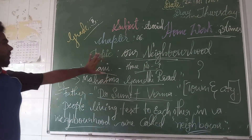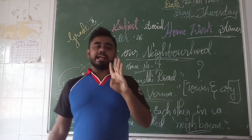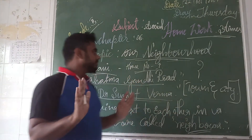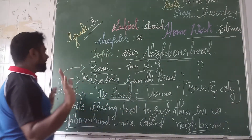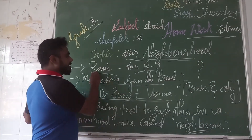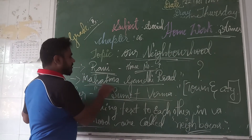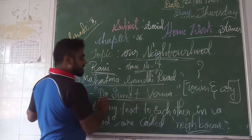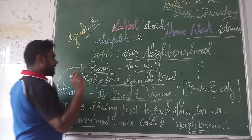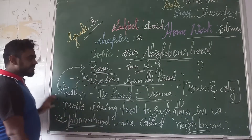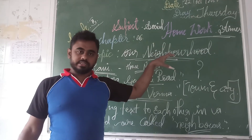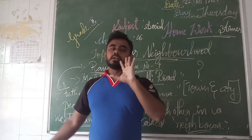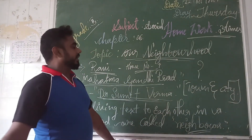So that is all the things for our first class of this chapter. What are the things we did today? Ravi lives at House Number 1, Mahatma Gandhi Road. His father's name is Dr. Sumit Verma. Neighbourhood means the houses which are next to other houses. The people living in those houses are called Neighbours.